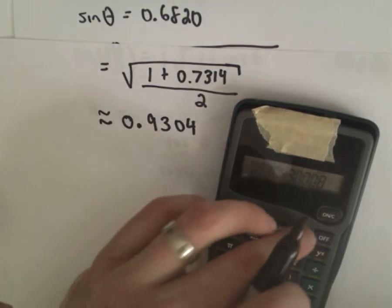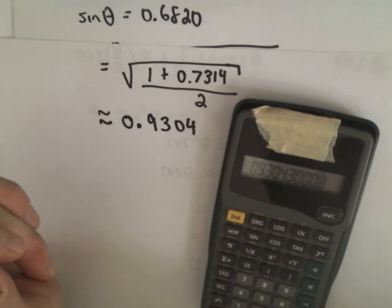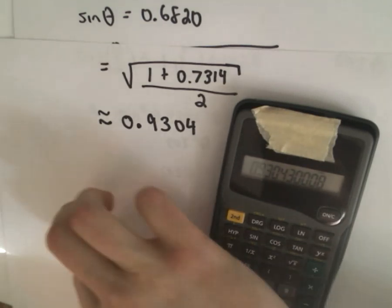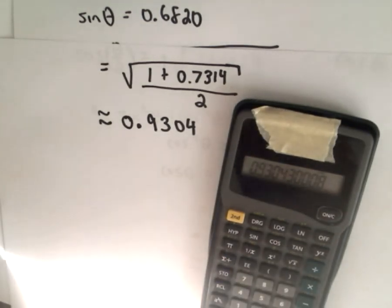Alright, I hope these examples help and make some sense. Again, it's just a lot of identities to remember. The sum and difference identities, especially for cosine and cosine, I always had those memorized when I was taking precalculus and calculus.